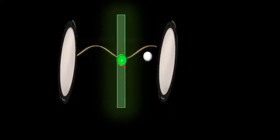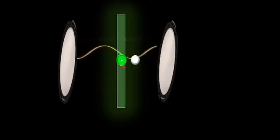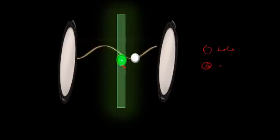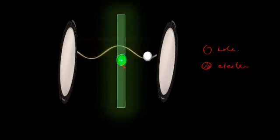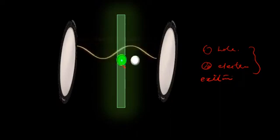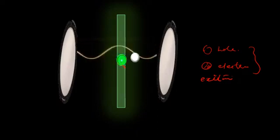The electron and hole are oppositely charged and they attract each other. For a while they orbit around each other, and this behavior forms a new particle called an exciton. An exciton is a combination of a hole and an electron. At some point the electron falls back into the hole, releasing light of the same frequency as the one that originally created the exciton.